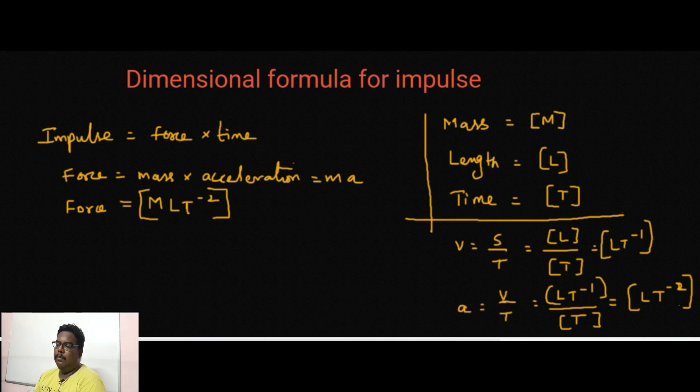We are now going to calculate the dimension formula for impulse. Impulse is given by the formula force times time, and force is given by mass times acceleration.